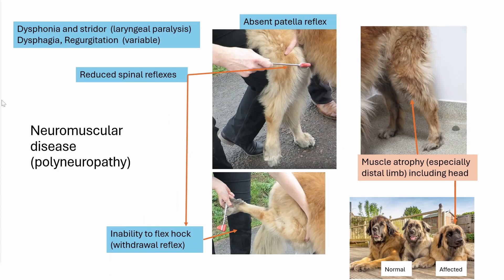In the history — if you remember from top tip number one — we need to ask about the dog's or cat's voice. This dog has dysphonia and stridor. In this disease there is variable dysphagia and regurgitation. There are also reduced spinal reflexes and inability to flex the hock on the withdrawal reflex.